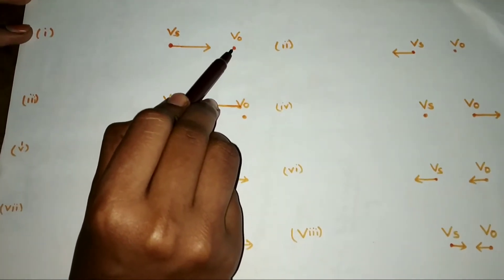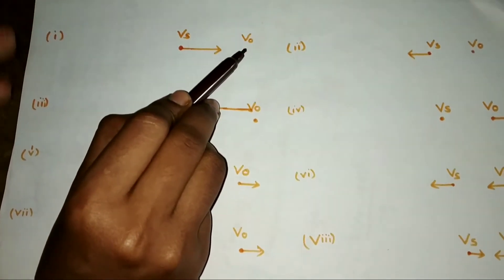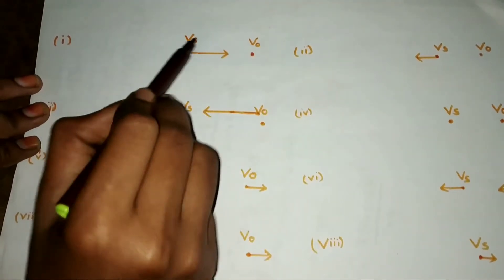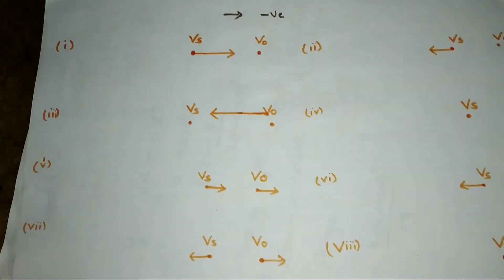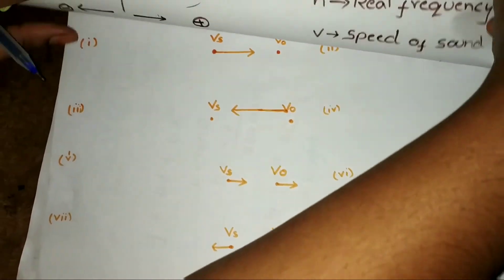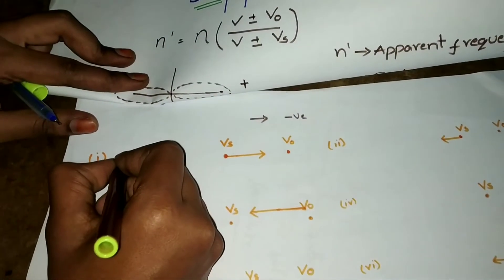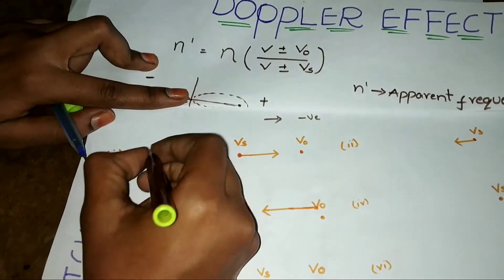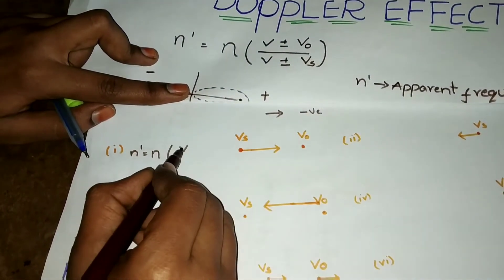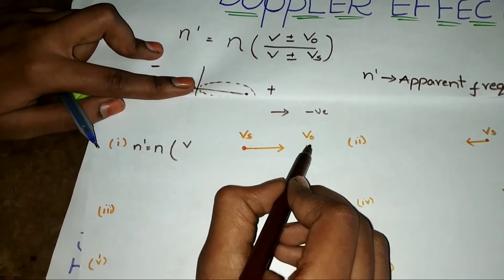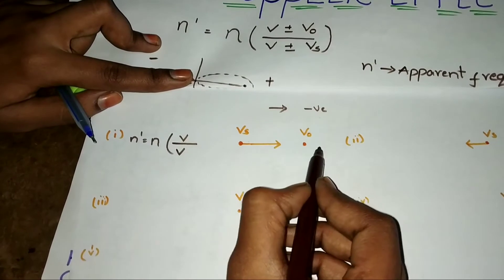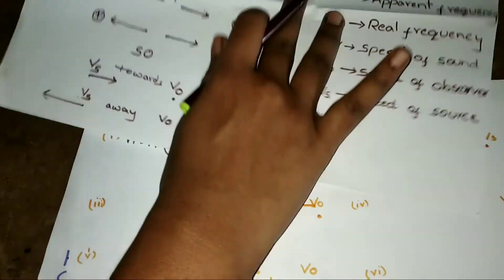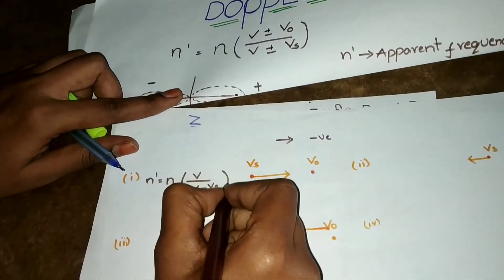Case 1: Velocity of observer is at rest and source is moving towards the observer — that is in the positive direction. So I have to take VS as negative. Apparent frequency N-dash equals real frequency N times (V plus or minus V0) over (V plus or minus Vs). Since observer is at rest, V0 equals zero. Source is moving towards observer — positive direction — but trick says take negative. So the formula becomes: N-dash = N × V / (V − Vs).